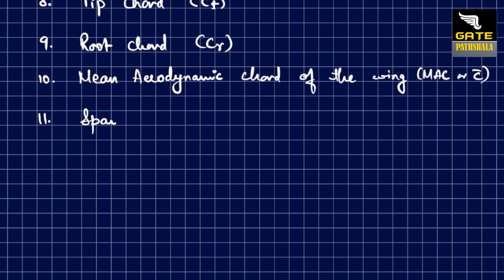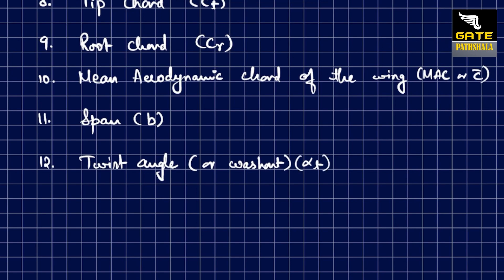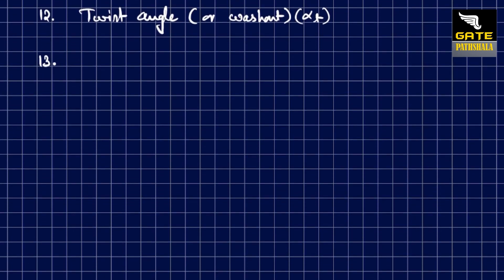The next parameter is the wing span — the distance from tip to tip. Then the twist angle, which covers the geometric twist, or what is more commonly referred to as wash-in or wash-out, denoted by the symbol alpha-t (αt).